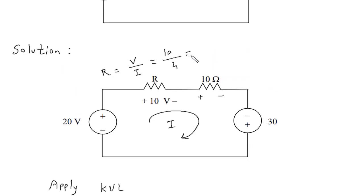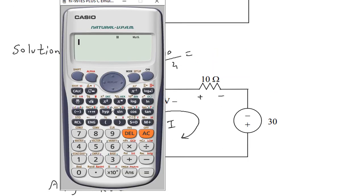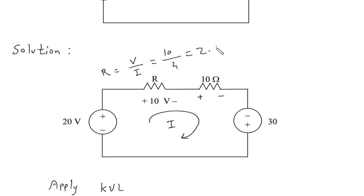So 10 by 4 is 2.5 Ohm. Therefore, R is equal to 2.5 Ohm.